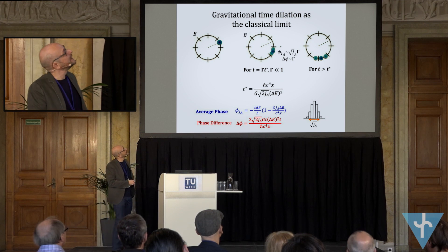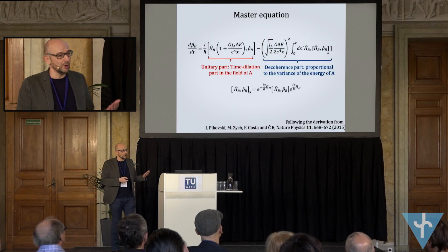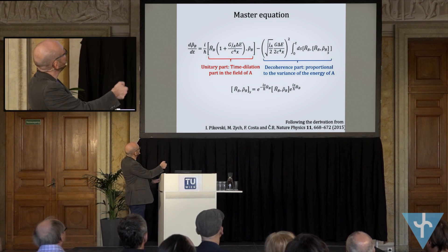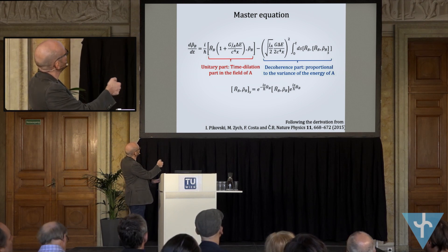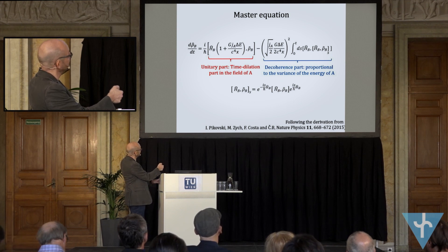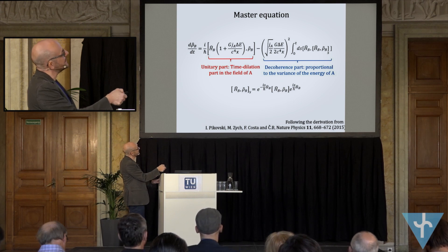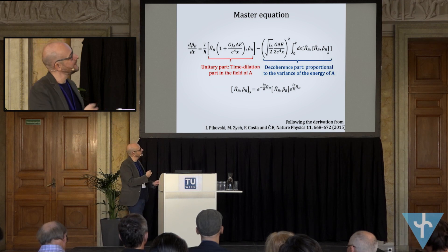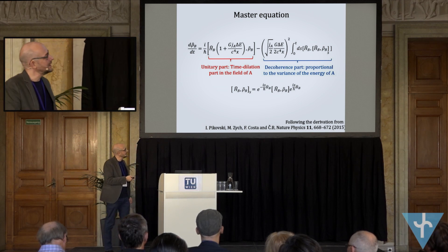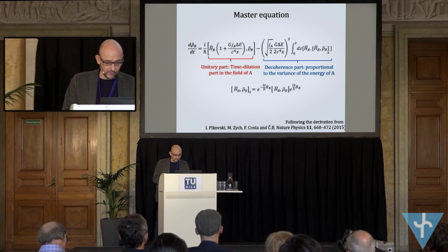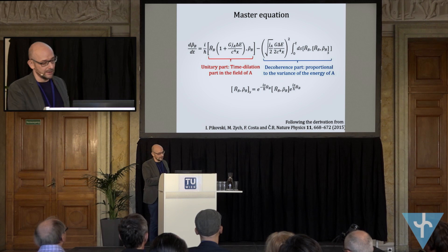Going to the full master equation description of these clocks, you see a unitary part where the B clock's evolution depends on its own Hamiltonian plus the mean energy of the A clock, and a decoherence part proportional to the variance of the energy of the A clock — depending on how broad the A clock's energy distribution is.